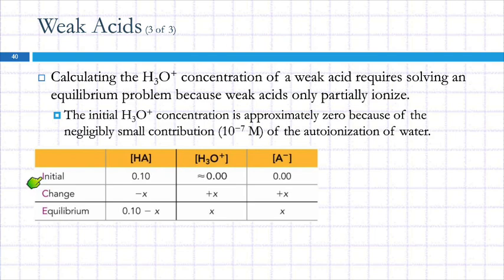So here's our ICE table: I, C, E, initial change, equilibrium. So this would be for that 0.1 molar acid. We're starting with this initial of the acid itself. And this is zero, essentially zero, and that is zero. Then a change is going to occur. This is going to go down by an amount X. These will both go up by X. And the equilibrium is just the sum of those two boxes up there. 0.1 minus X. This will be X, and that will be X.